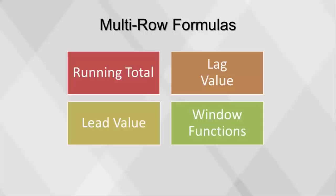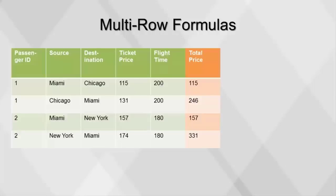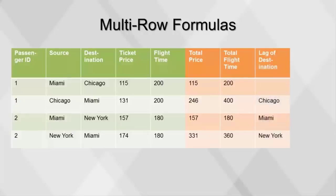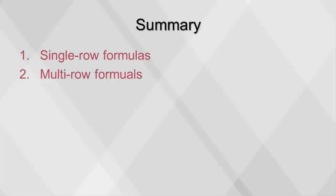An example of multi-row formulas is in the transportation industry, where a row typically represents one leg of a trip. After sorting the data set properly, the lag function can be used to combine rows so that the data describing the round trip is displayed. Total price is a running total of ticket price grouped by passenger ID. Total flight time is a running total of flight time grouped by passenger ID. Lag of destination uses the lag function, which is dependent on the sort order of the data set. Sum of ticket price is a window function — the sum of the ticket price partitioned by passenger ID. This concludes our video on single and multi-row formulas.